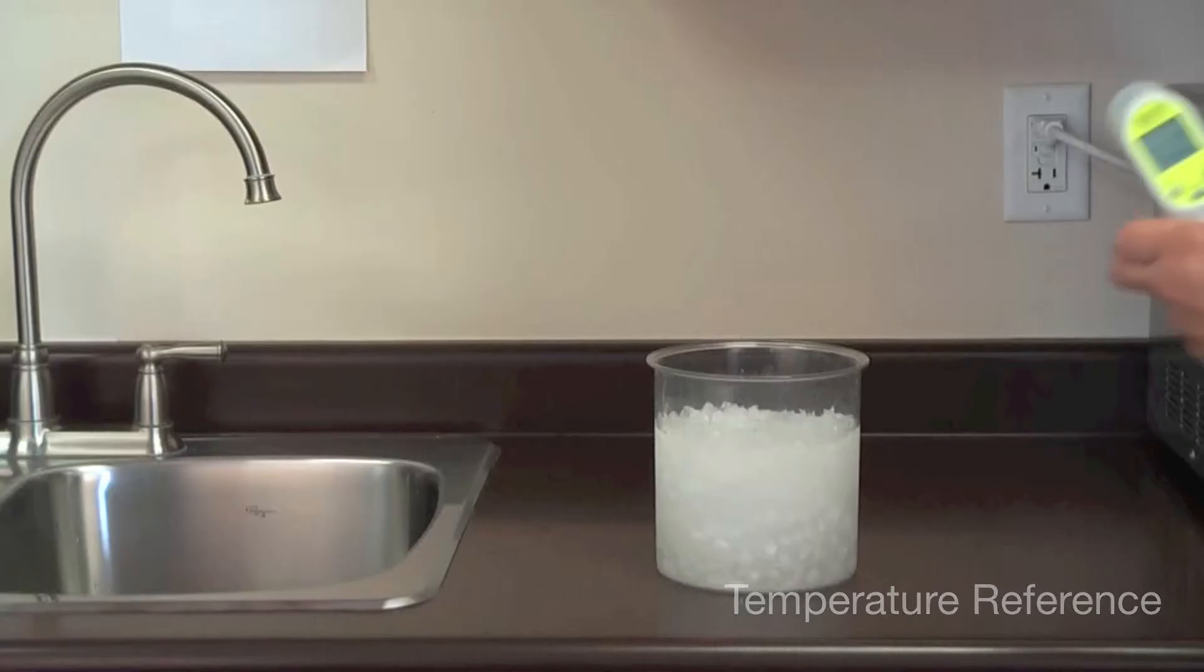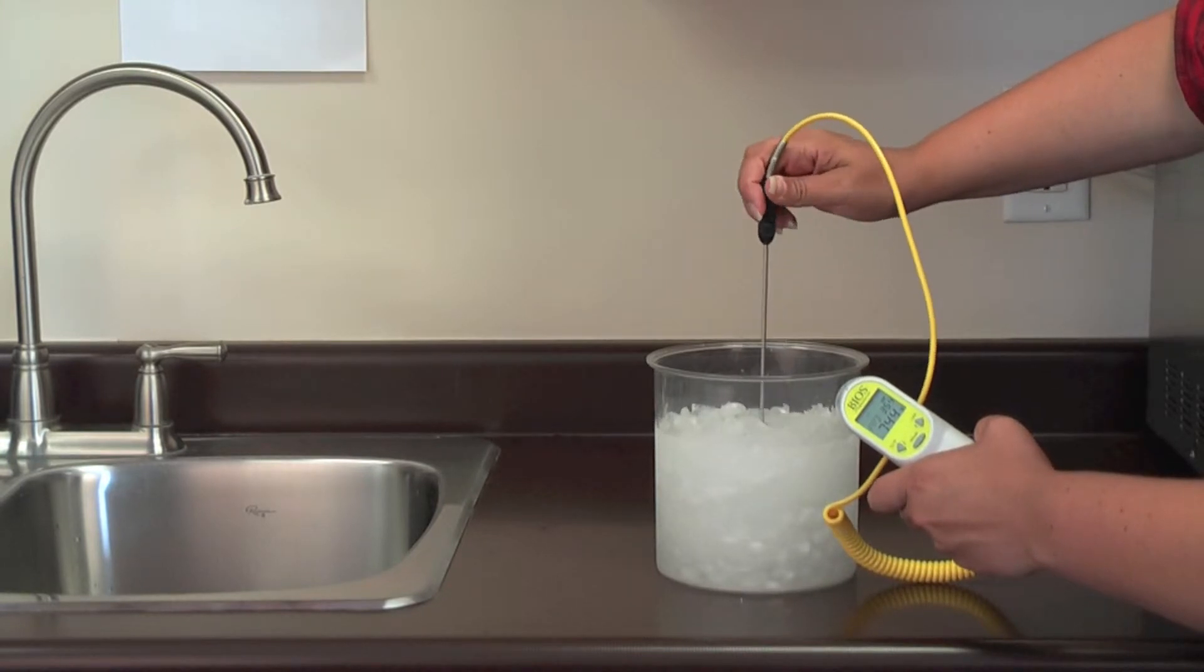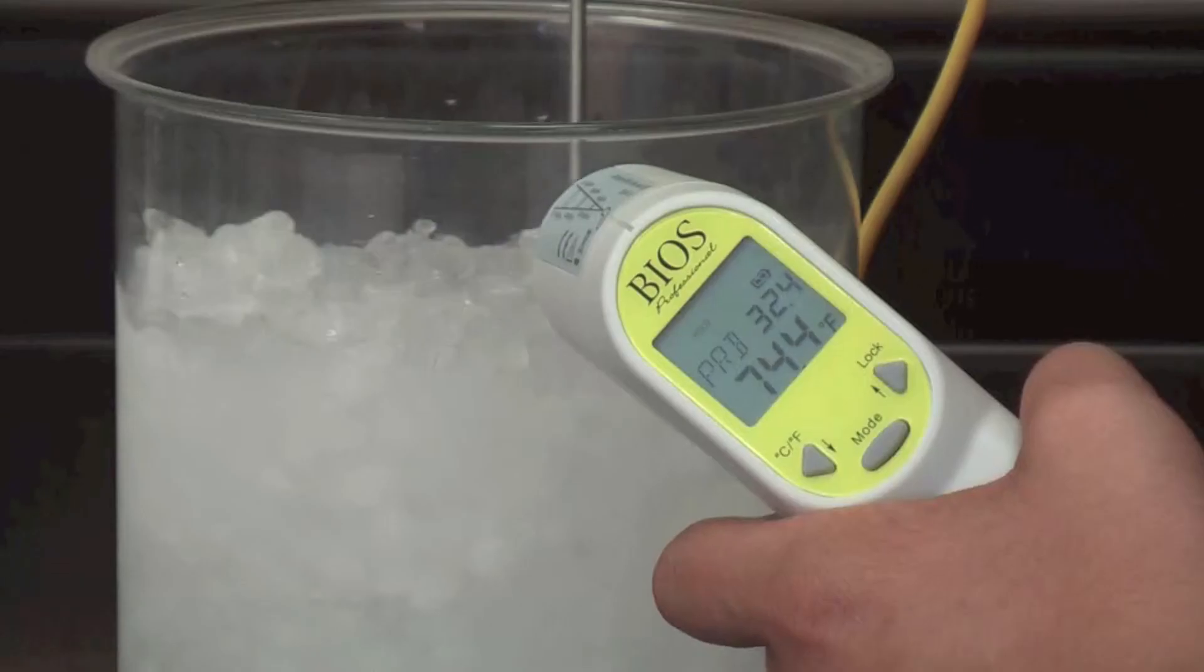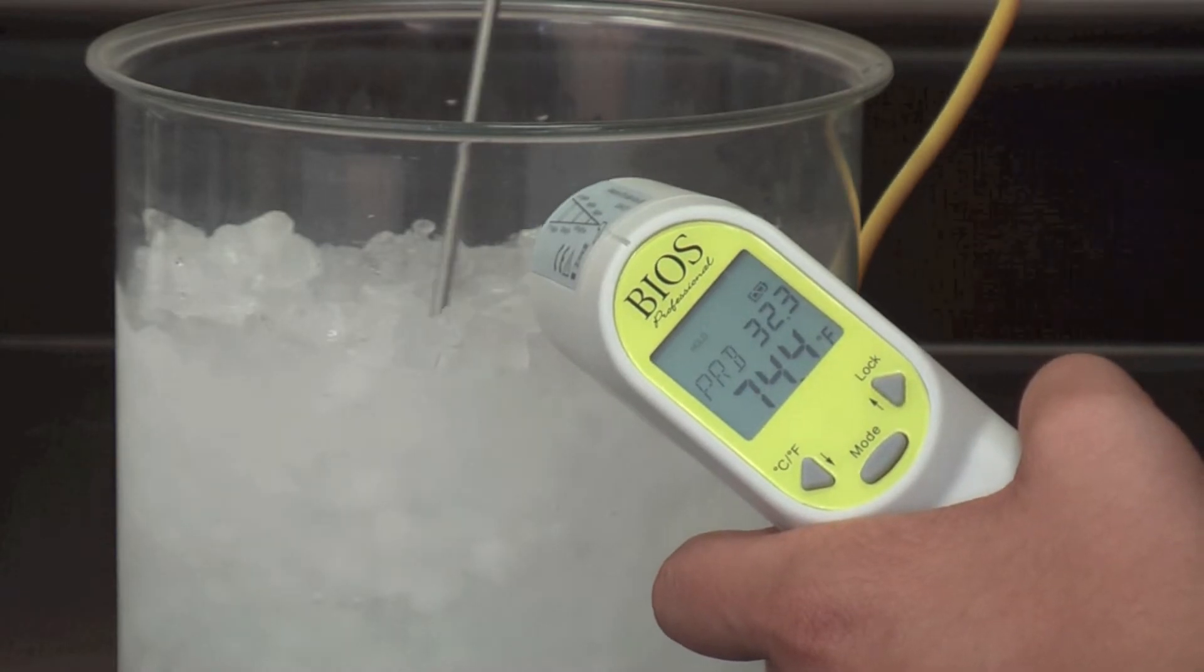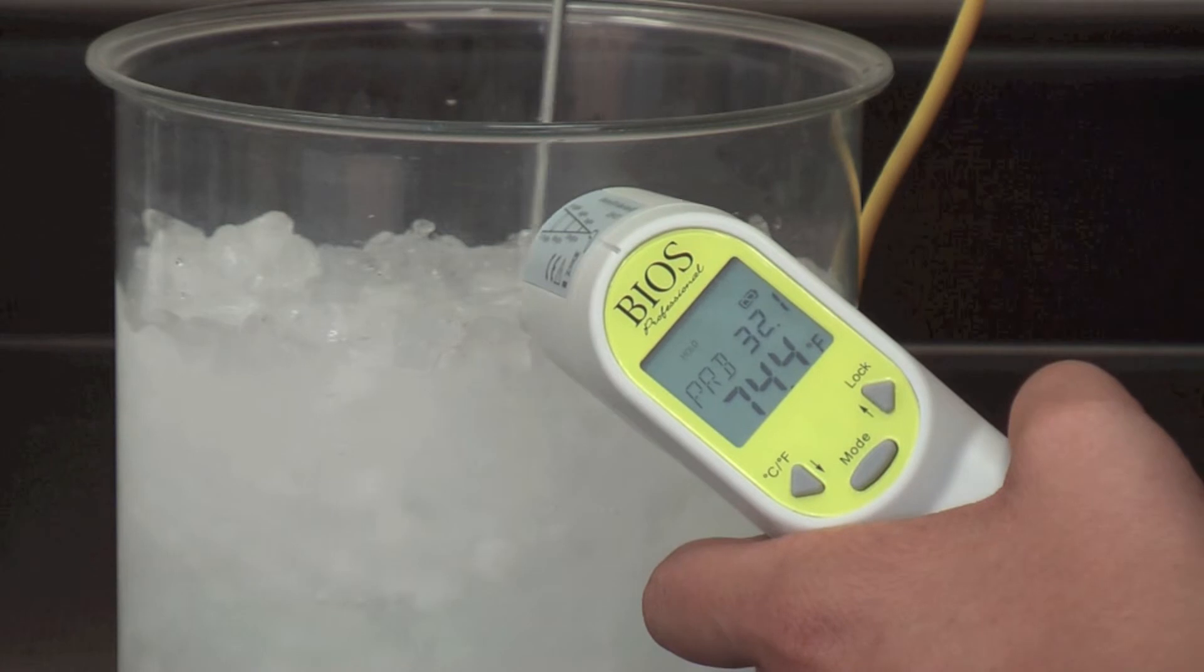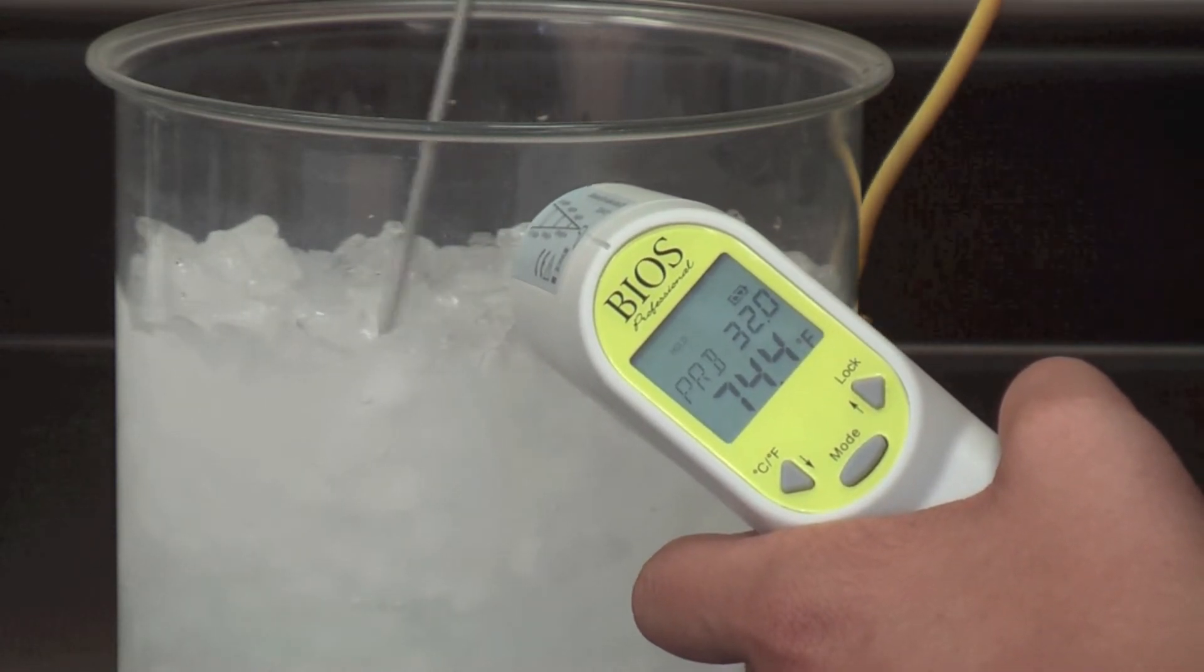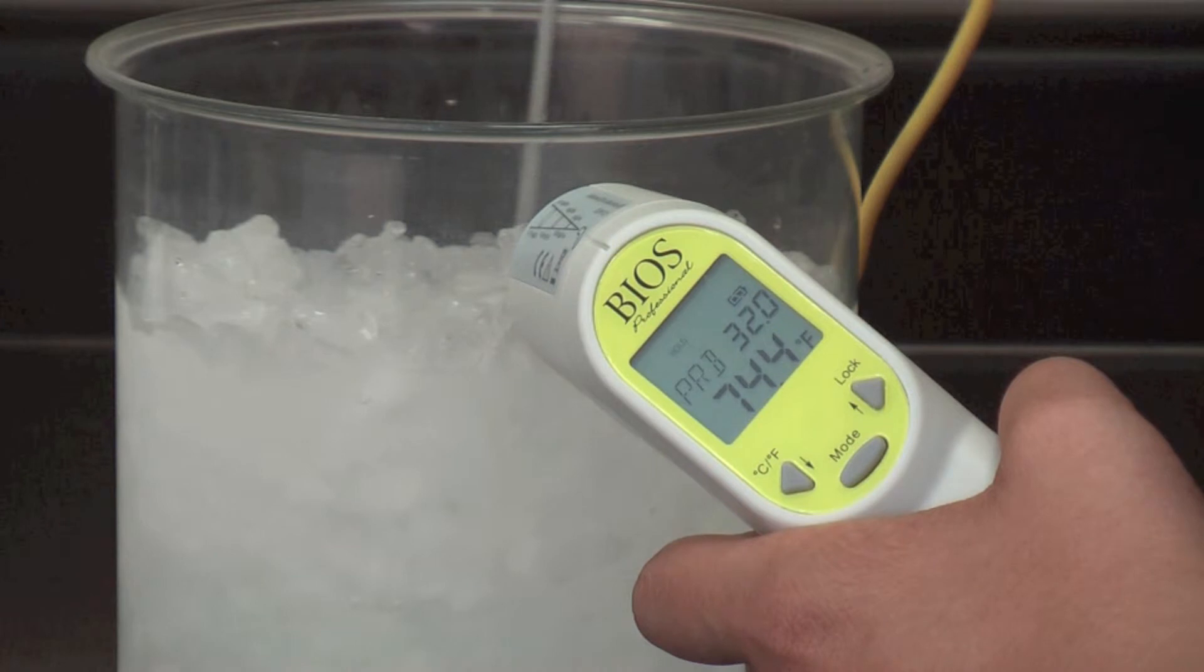To temperature reference your thermometer, insert the probe into the ice slurry making sure to avoid the sides and bottom of the container. Stir for approximately 1 minute. Once the reading has stabilized, you should be at 0 degrees Celsius or 32 degrees Fahrenheit. This indicates that your thermometers are still within calibration.